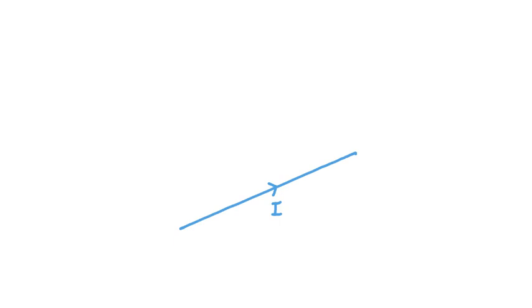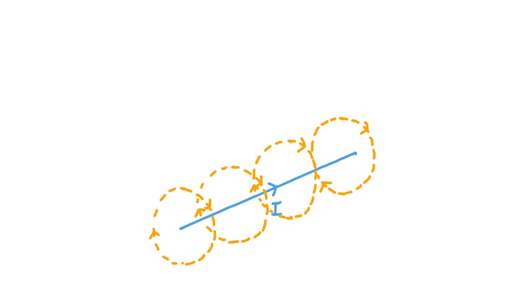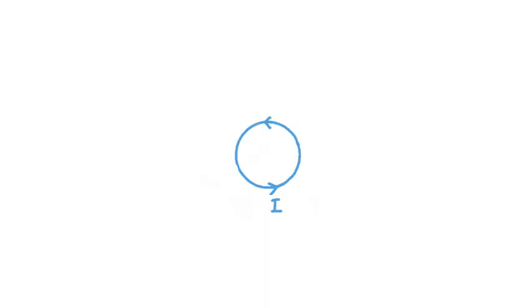A good place to start is to recall that any current-carrying wire will produce a magnetic field around itself. This holds true if we take the ends of that wire and shape it into a circular loop. If that loop looked like this, it would create a magnetic field whose effects could be experienced both inside and outside this circle. Our focus is going to be at the very center of this loop.